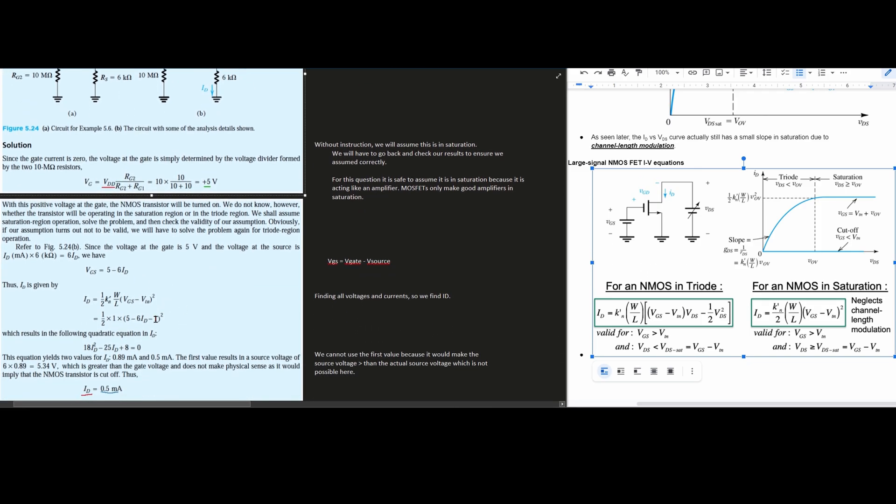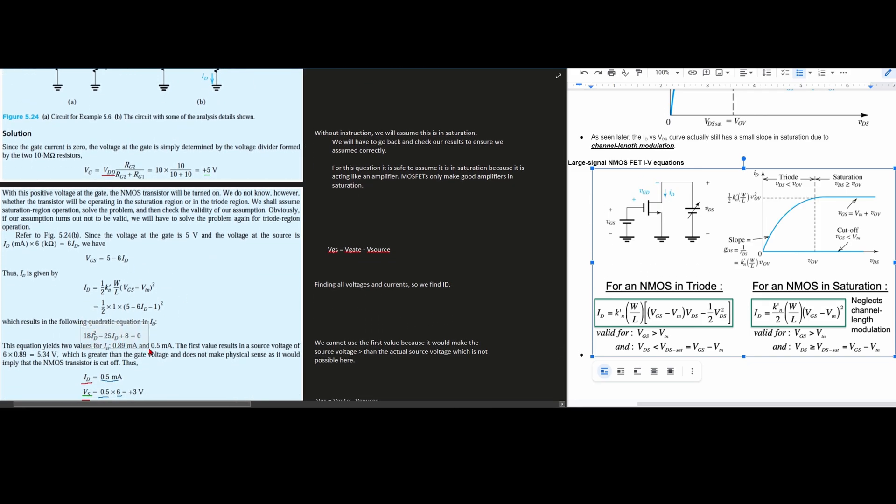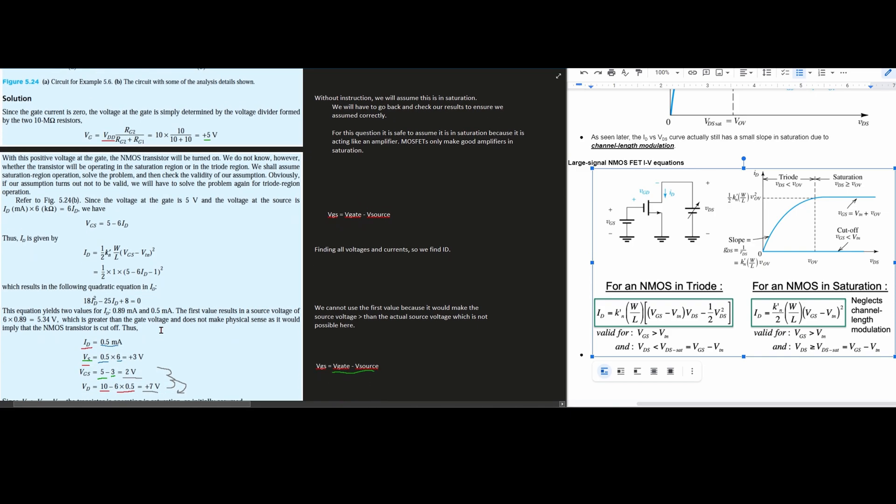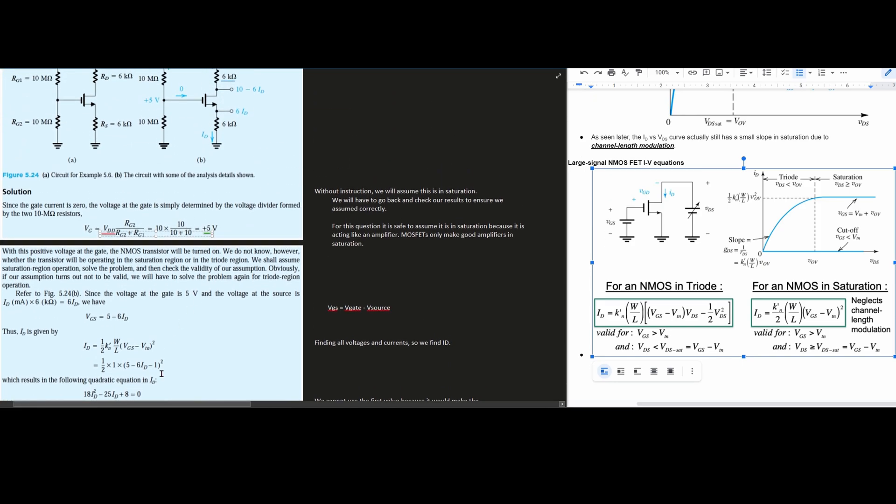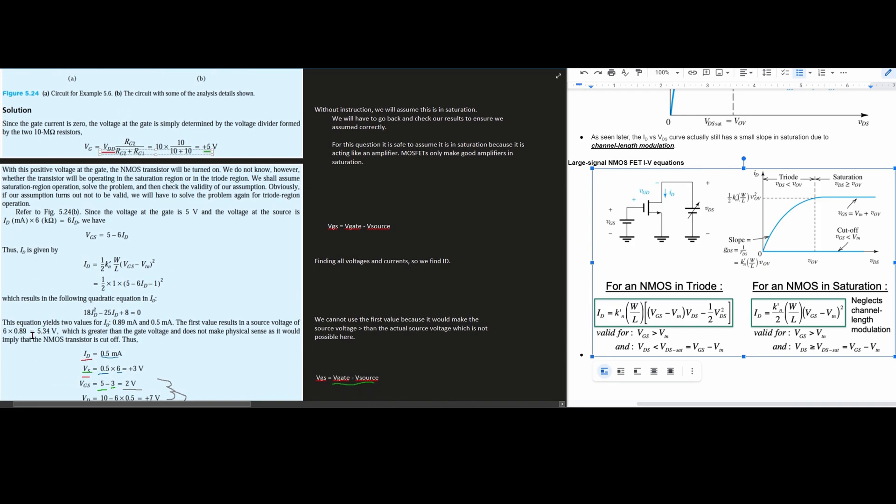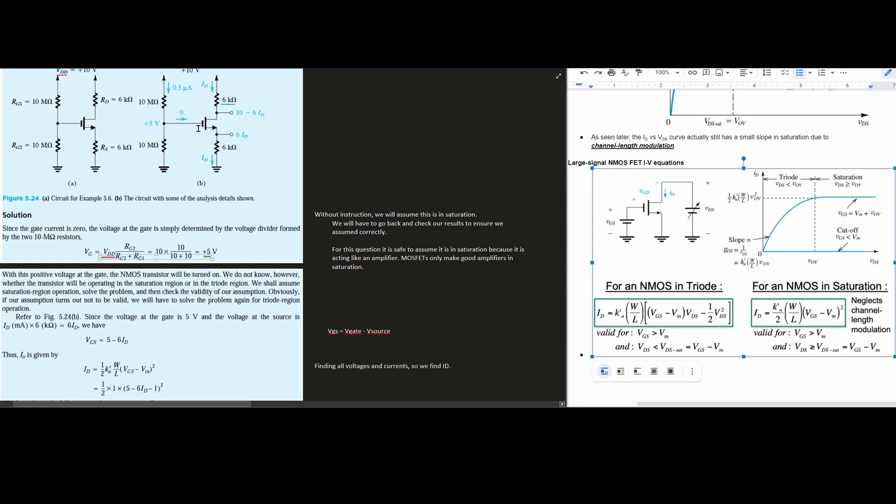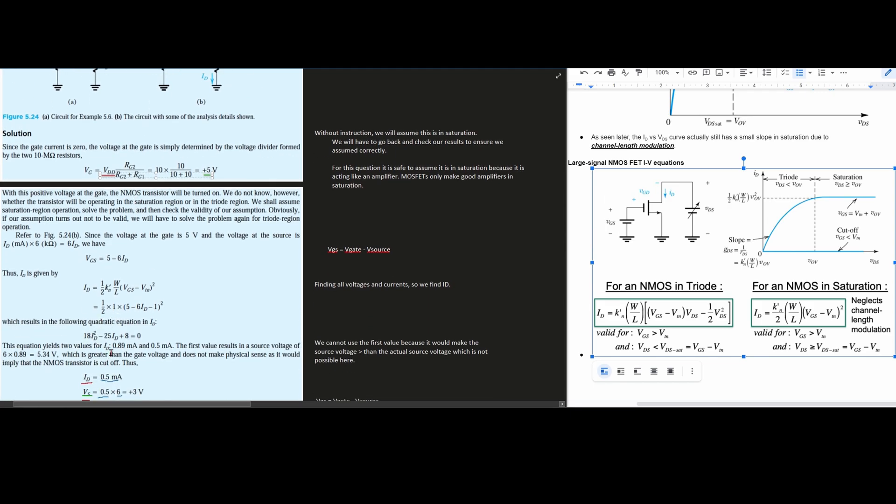Once we plug them into the equation, we're going to result in this. So we're going to have to use the quadratic equation. Quadratic equation, of course, is going to yield us two values, a 0.89 milliamps and a 0.5 milliamps. The first value, 0.89, shows a source voltage of about 5.34 volts. And that's going to be greater than our gate voltage, which is right here at the VG. And so since this value, 0.89, is greater than what we have going into it, well, that's not going to be valid. We're not going to use that.